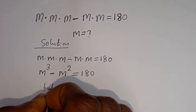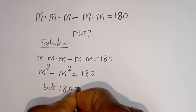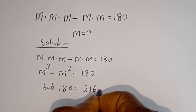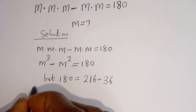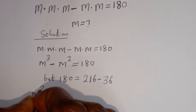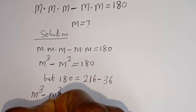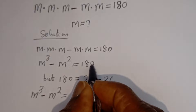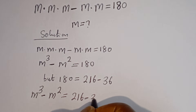But 180 is equal to 216 minus 36. And here we have M to the power of 3 minus M squared is equal to — let's replace this 180 by this — we have 216 minus 36.